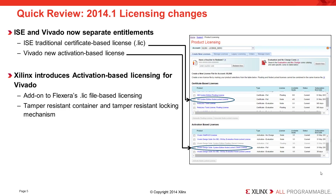For a quick review of 2014.1: ISC and Vivado are now separate entitlements. When you purchase Vivado starting in 2014.1, you'll see two entitlements in your Xilinx Licensing Center — first, an ISC traditional certificate-based .lic file, and second, a Vivado activation-based license which is new for 2014. Xilinx also introduces activation-based licensing for Vivado as an add-on to Flexera's .lic file-based licensing.